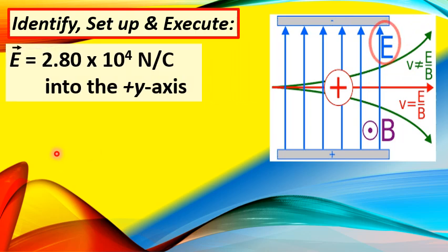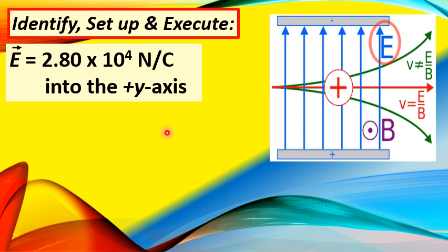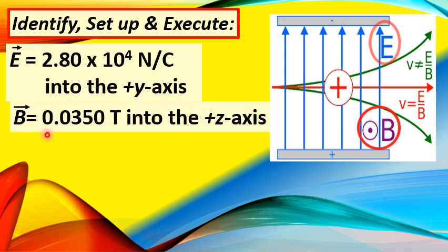As shown in the figure, we are given the electric field vector capital E equal to 2.80 times 10 to the fourth power newton per coulomb, directed towards the positive y-axis — that is, directed upward. The magnetic field vector B has a magnitude of 0.0350 tesla and is directed into the positive z-axis. The dot symbol in the figure means that the magnetic field capital B is directed towards the reader.